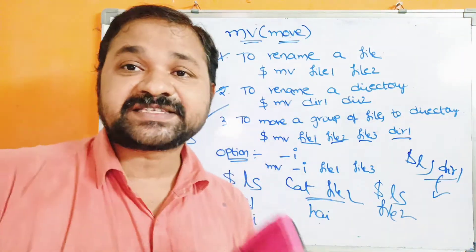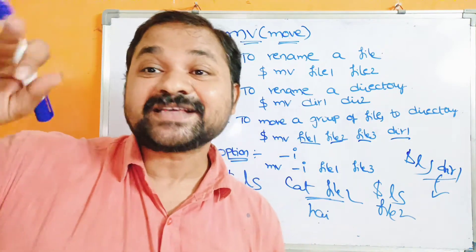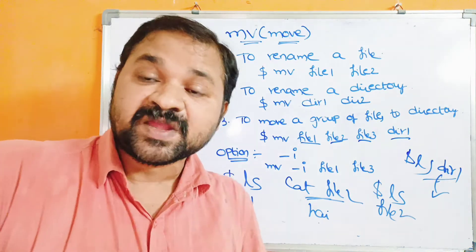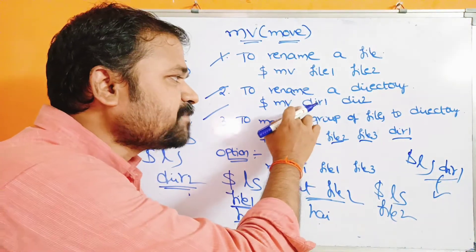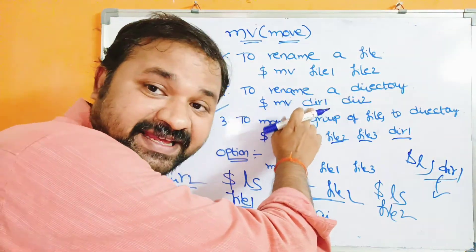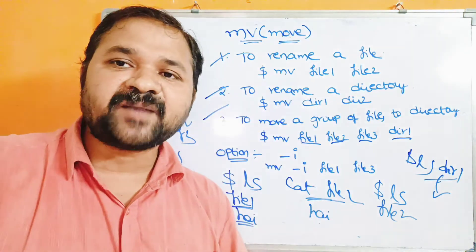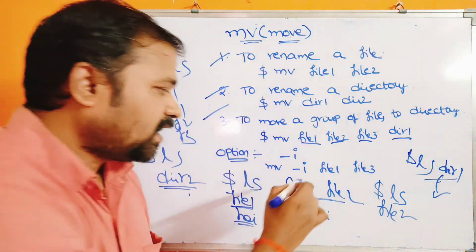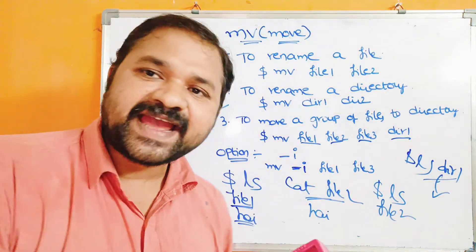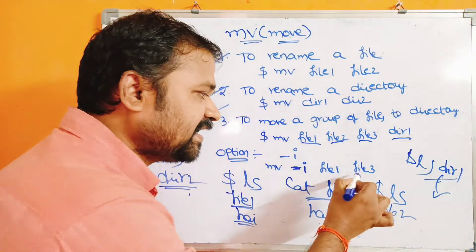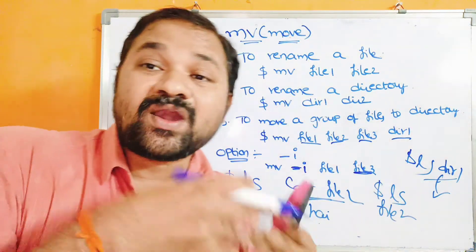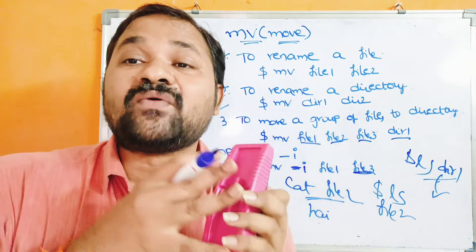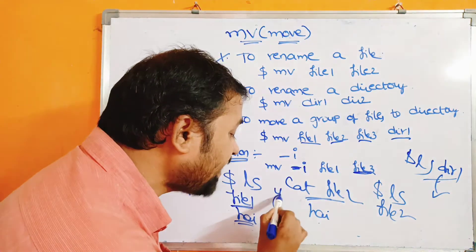The mv command has one option: -i. In the copy command we also had -r, which is useful to copy files from one directory to another — but in mv there is no need for -r. The -i option stands for interactive. It is needed when the destination file already exists — it will ask whether you want to overwrite or not.